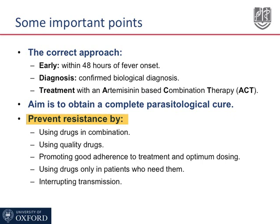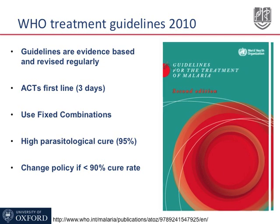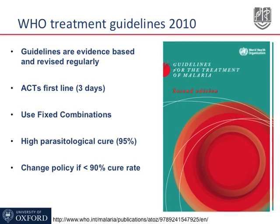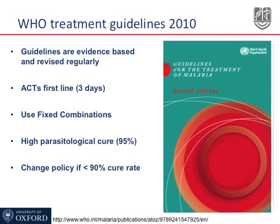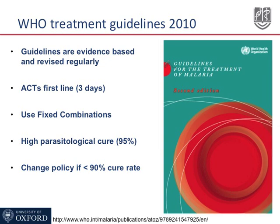In areas of low transmission, we will also prevent resistance by interruption of transmission. The most comprehensive document on the treatment of uncomplicated malaria is the WHO treatment guidelines. These guidelines are evidence-based and they are updated regularly. They recommend artemisinin combination therapy to be used as first-line treatment and also to use fixed combinations.